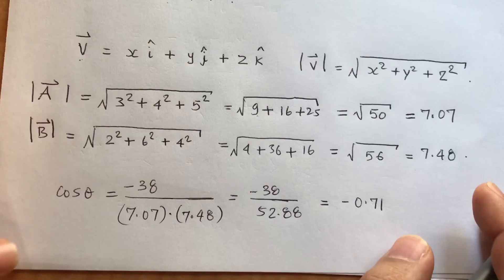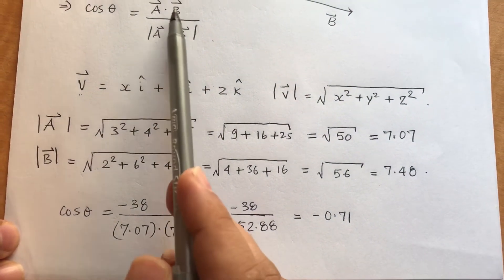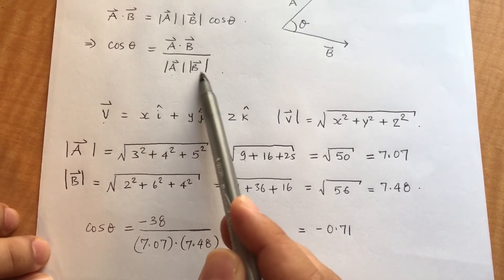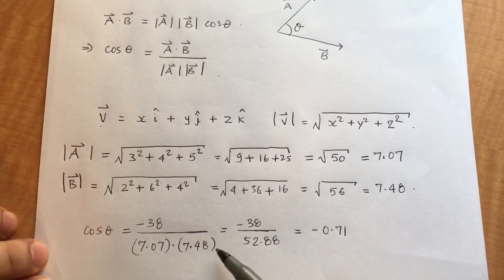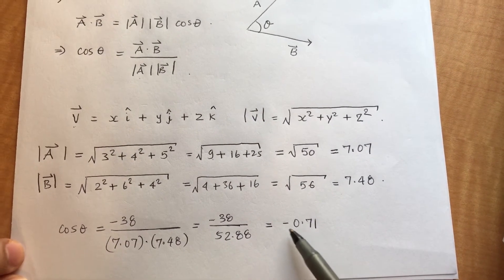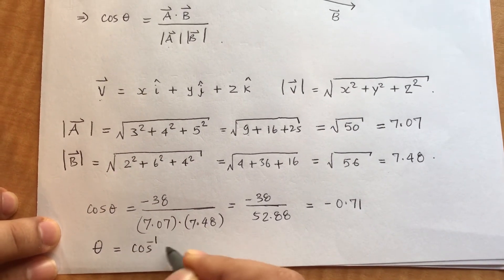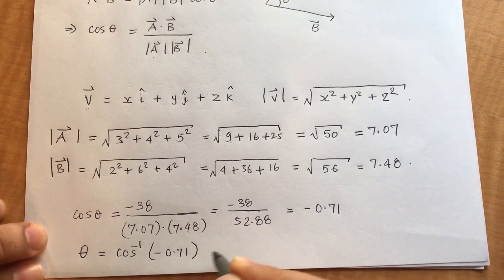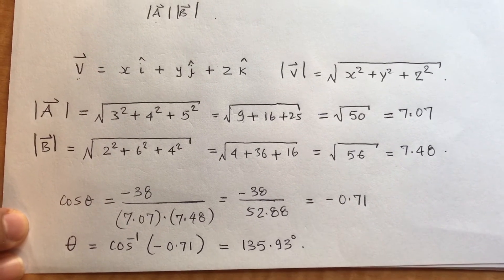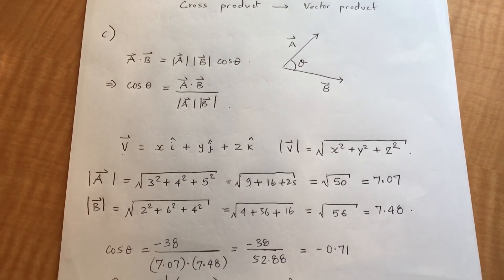The magnitude of a is about 7.07. Plugging the values into the formula, cosθ = −0.71, so θ = cos⁻¹(−0.71), which gives approximately 135.93°. That's how you calculate the angle between vectors a and b.